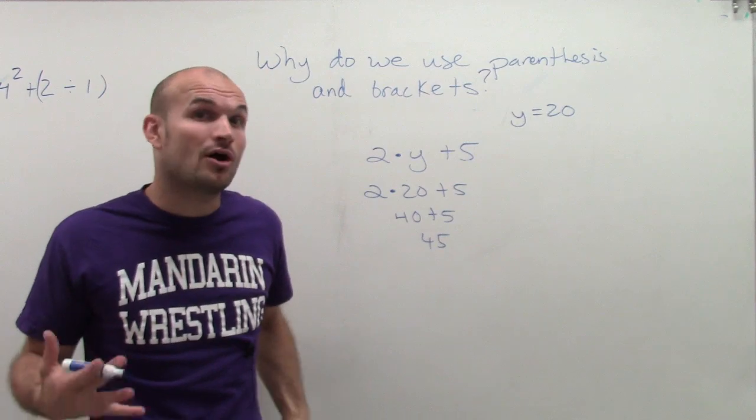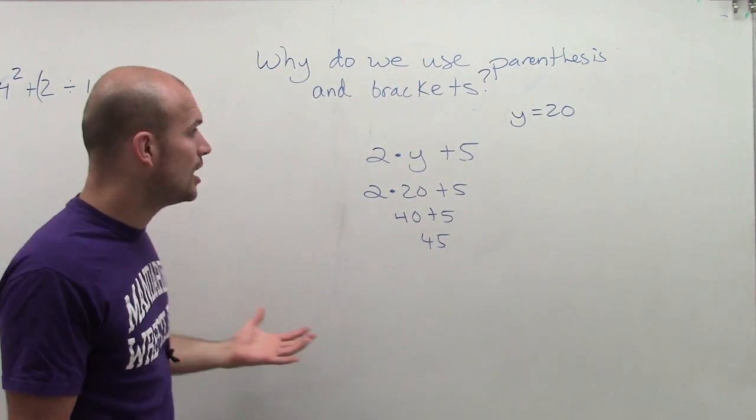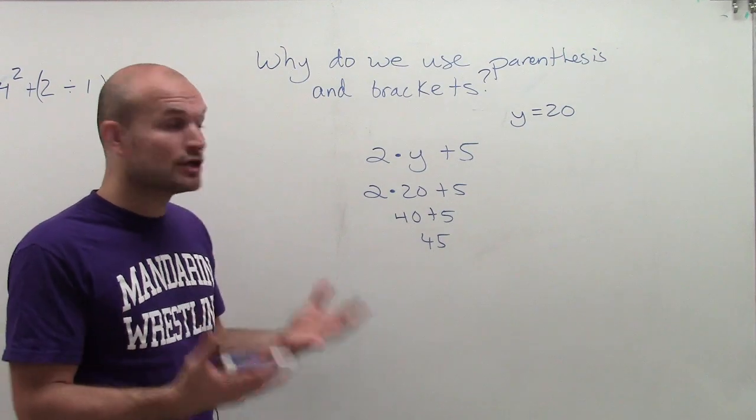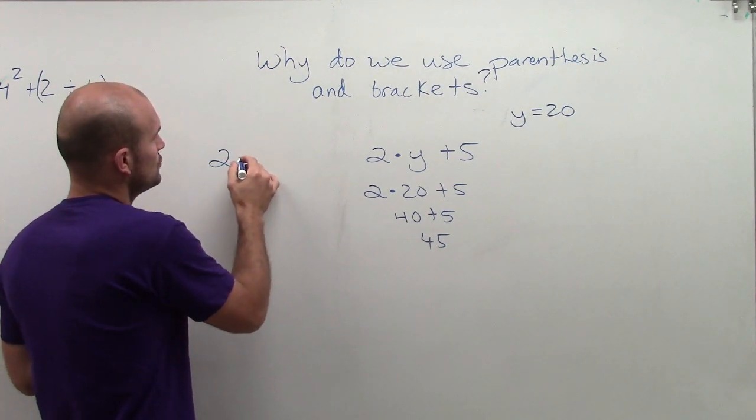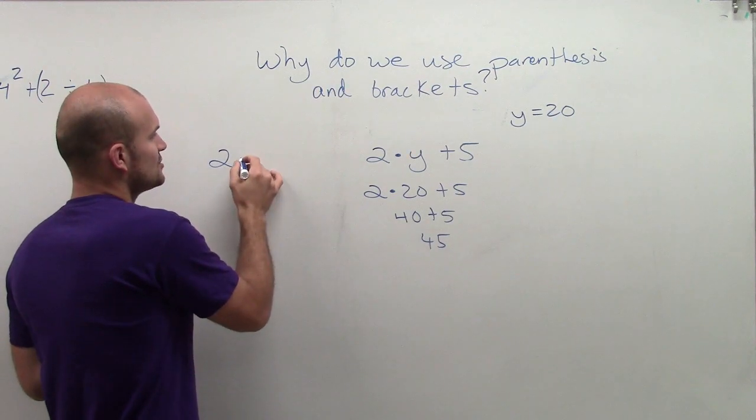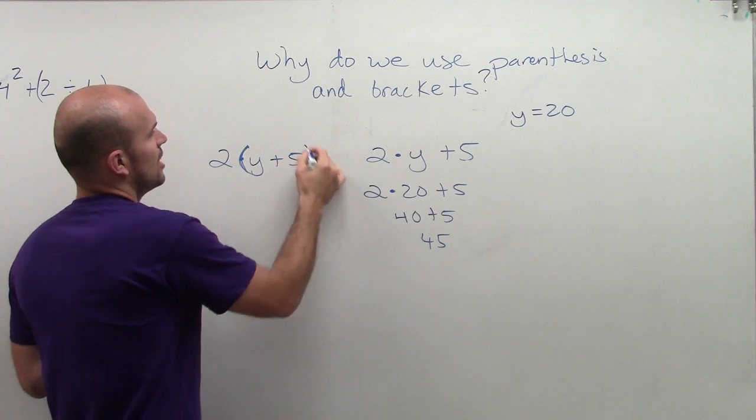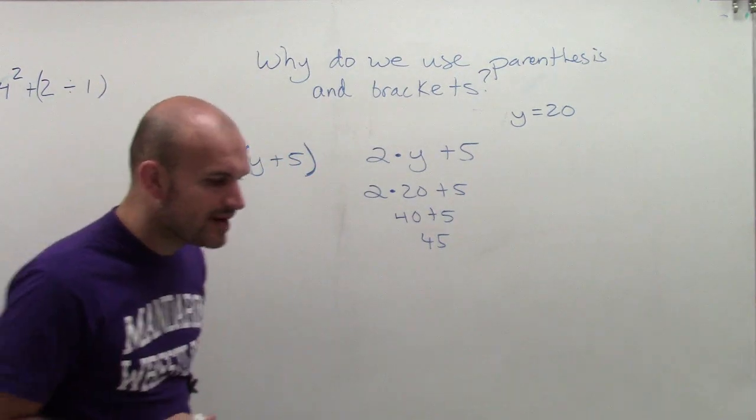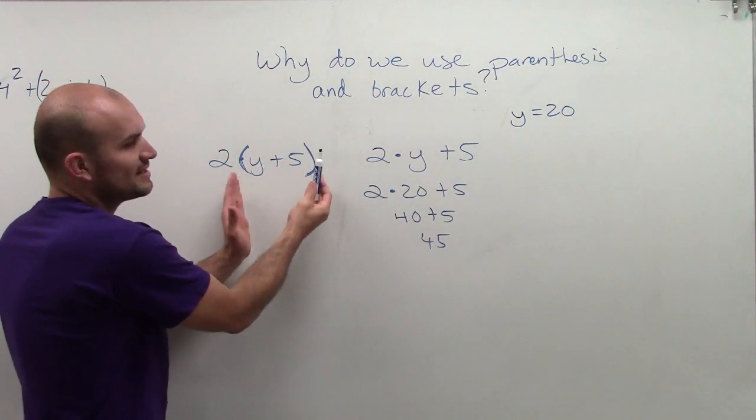And of course, you want to double all the money. Your dad said you would double all the money that you had that you gained for that day, including your money that you started with. So if I had 2, how can I represent this? So instead of saying 2 times y plus 5, what I can use is a parentheses. So what the parentheses allow me to do is now I'm going to say, I'm going to double everything inside of here.